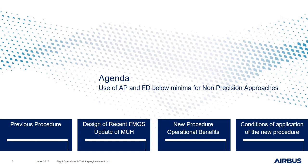In the first part, we will review the previous procedure, which is based on the previous FMGS design and previous minimum use height of the AP. In the second part, I will explain the design of the recent FMGS and the update of the minimum use height of the AP that we have introduced. In the third part, I will explain the new procedure and the operational benefits it can bring. And finally, we will review the conditions of application of this new procedure.